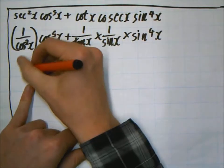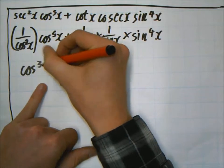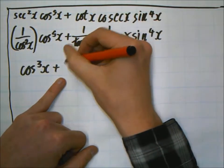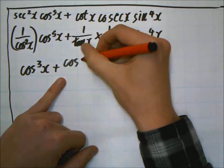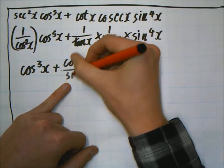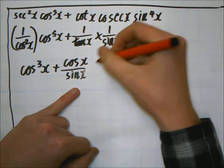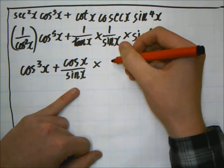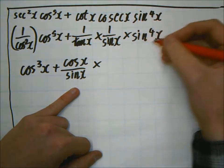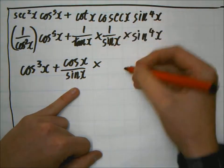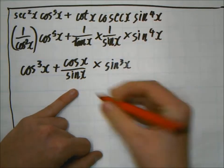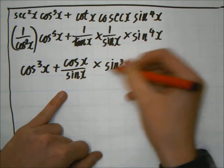And we know that this here, cos and that, will simplify into cos 3x plus cos x over sin x. And then the sin 4x and the sin x here will simplify into sin 3x.